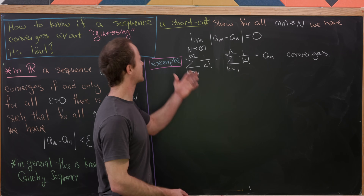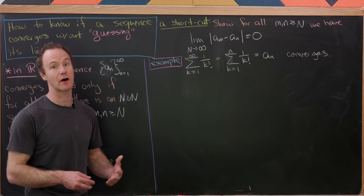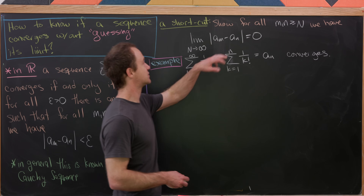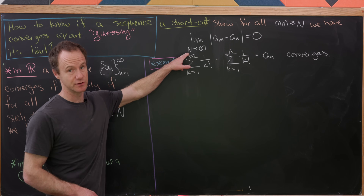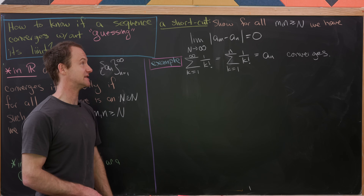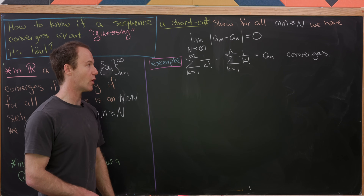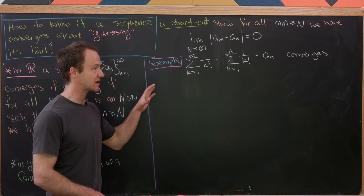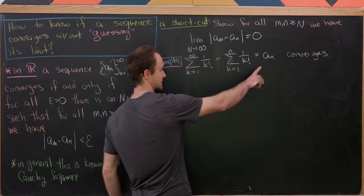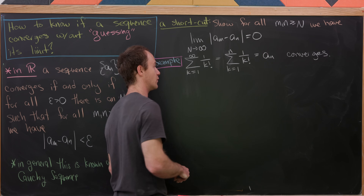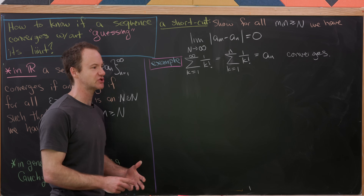Here's a shortcut similar to before that lets us do this kind of calculation without worrying about epsilons. We can show that for all m and n bigger than or equal to capital N, the limit as capital N goes to infinity of |a_m − a_n| equals zero. For our example we'll look at the sum as k goes from 1 to infinity of 1/k!. In terms of sequences, we define a_n as the partial sum from k = 1 to n of 1/k!, and we'll show this converges using the Cauchy criterion — which makes no mention of the convergent value.